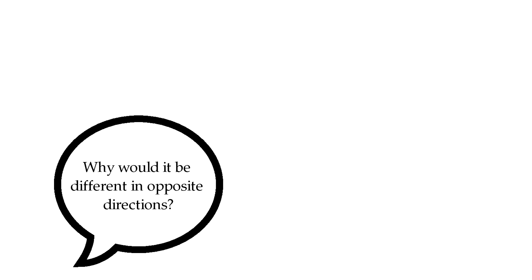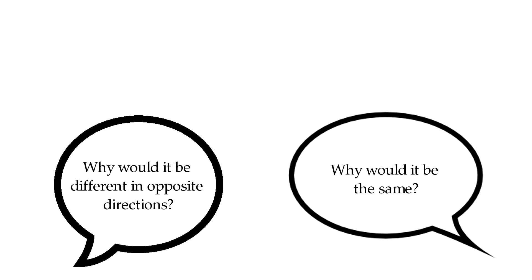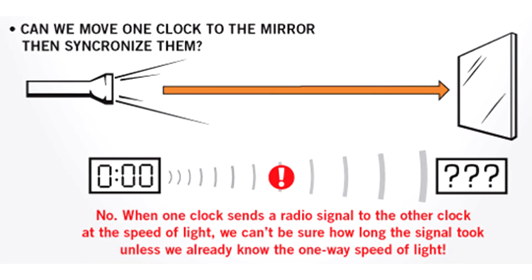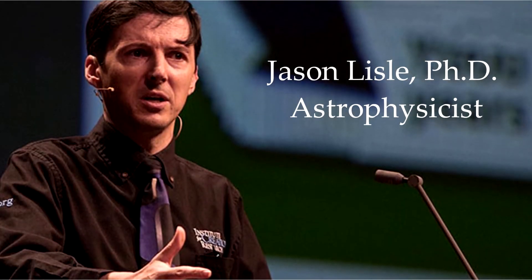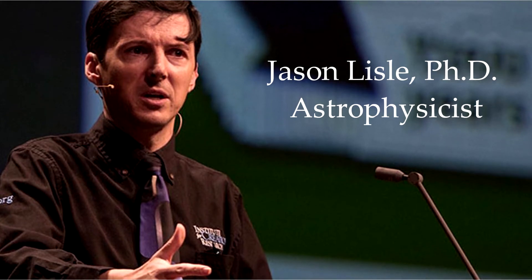People will ask me, but why will the speed of light be different in opposite directions? But why would it be the same? You see, the point is, we don't know. And to test, the one-way speed of light cannot be done through synchronized clocks or radio transmitters. Because in order to perfectly synchronize the clocks without motion affecting it, you have to already know the one-way speed of light, which is the very thing we are trying to measure. I recommend watching Jason Lyell's video on the speed of light, which I will leave in the description. It dives much more deeper into this.